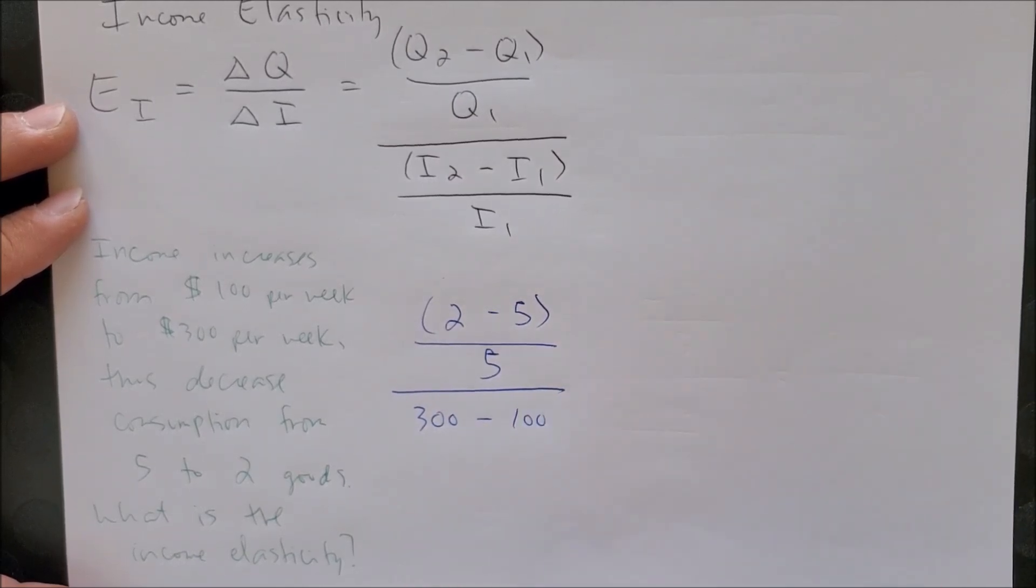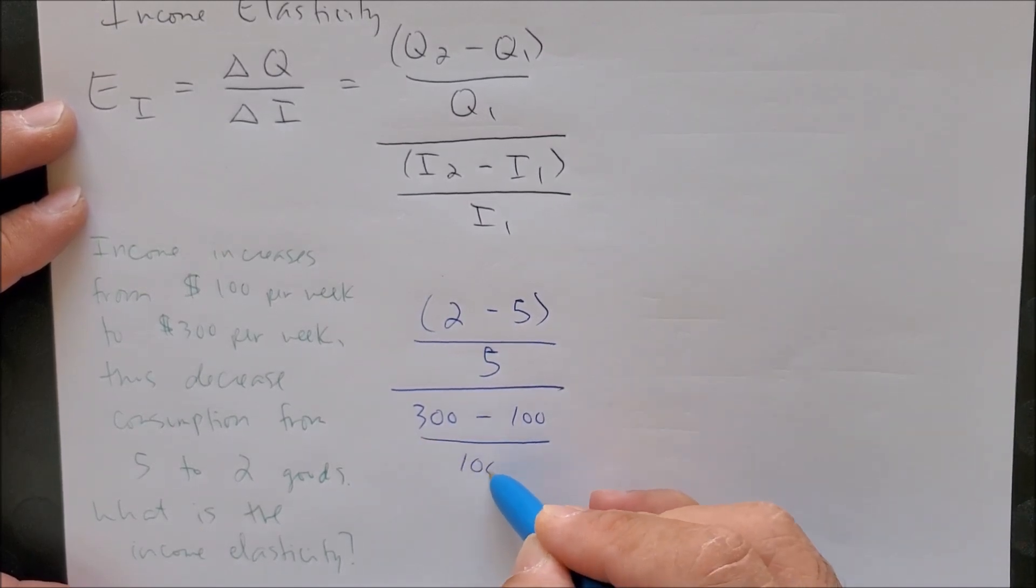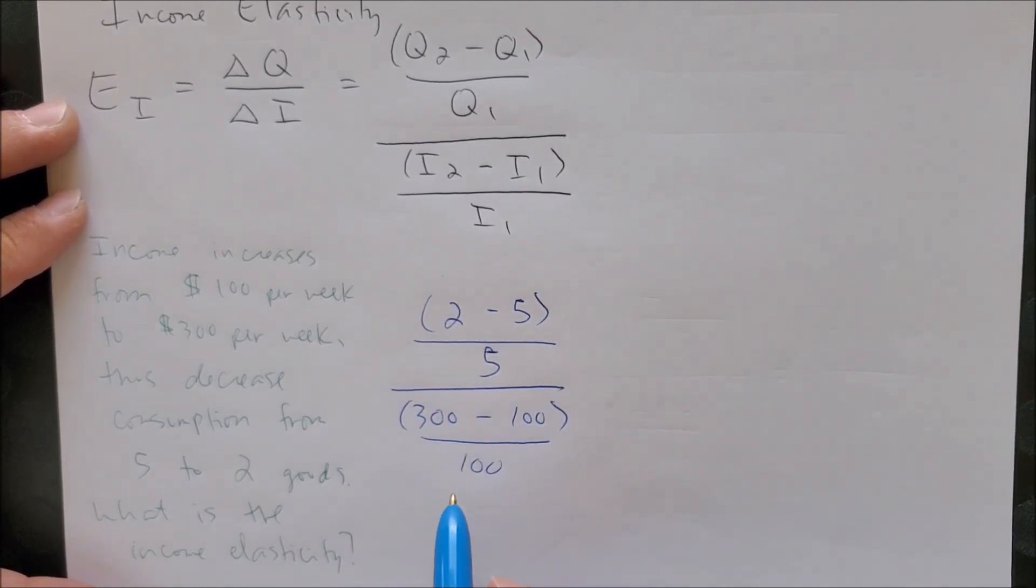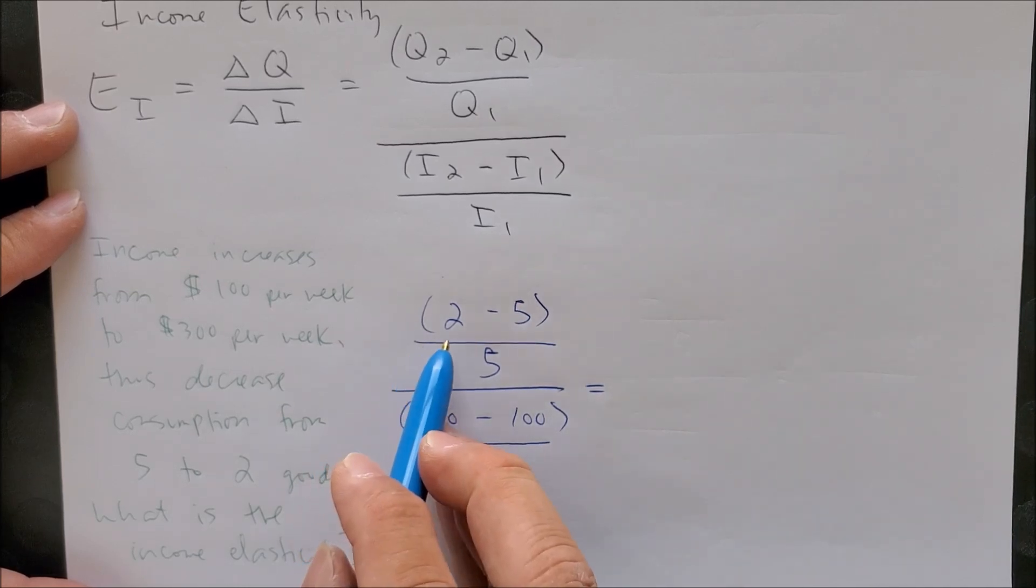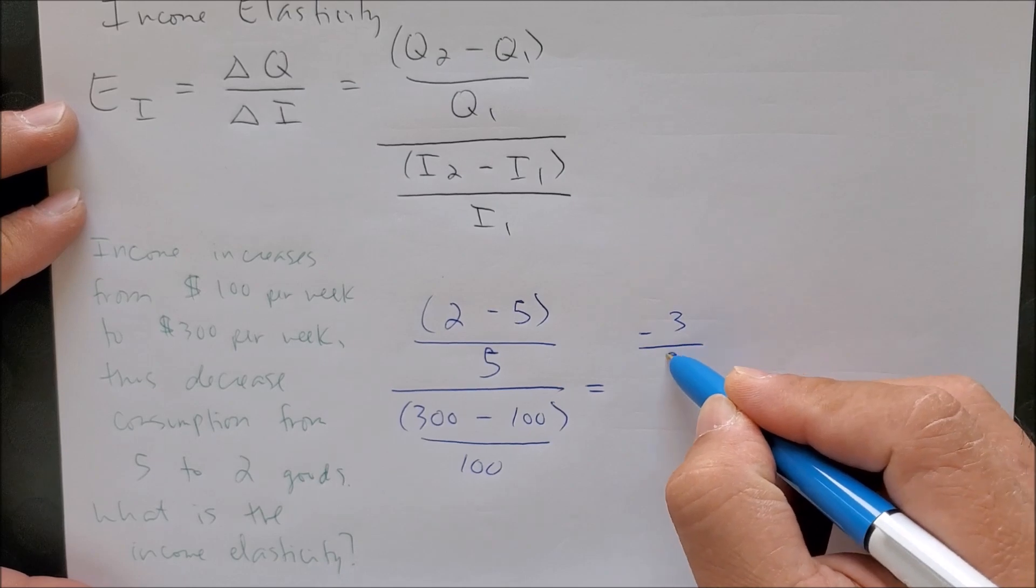Now for income, same thing goes here. We have $100 as our old income and $300 as our new income. Now we can put $300 as I2 minus $100 for I1 over $100 for I1.